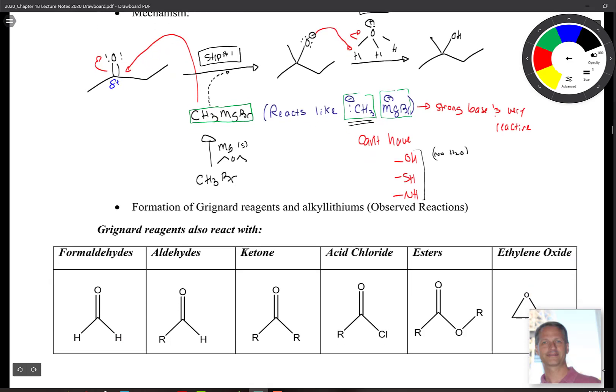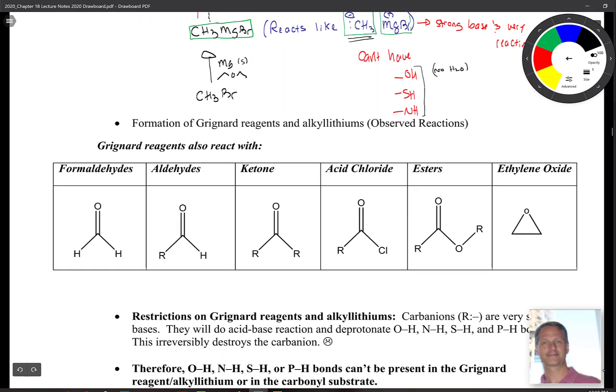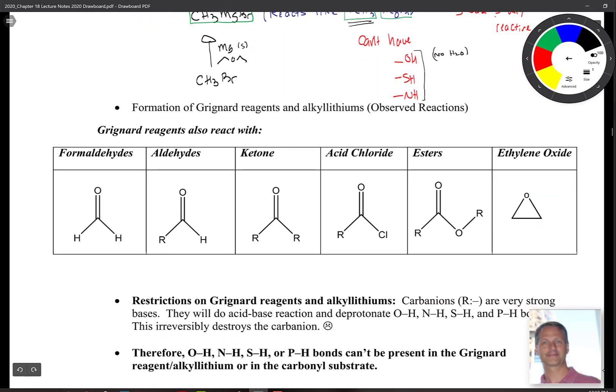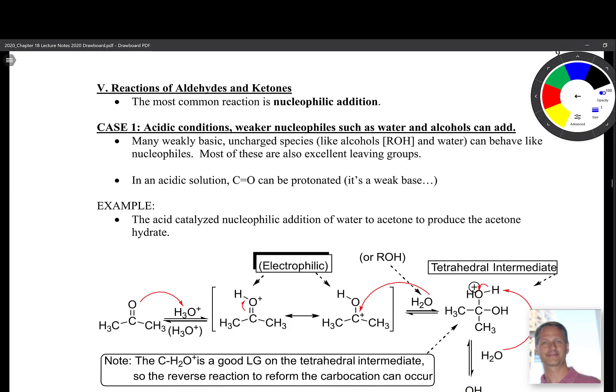Those Grignards react with all sorts of carbonyl-containing compounds: formaldehydes, aldehydes, ketones. We'll see acid chlorides coming up, esters coming up. And we saw ethylene oxide or epoxides back in first semester in chapter 14.